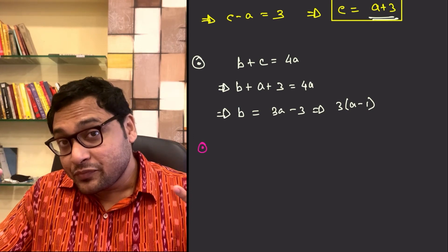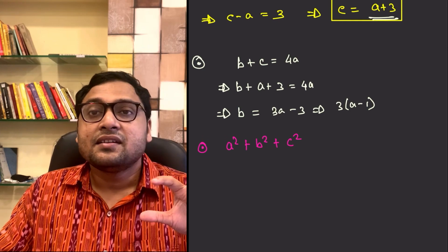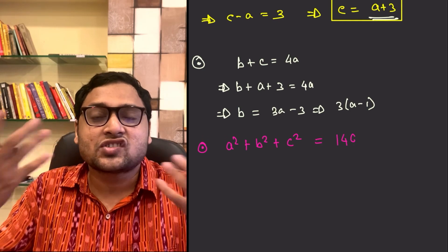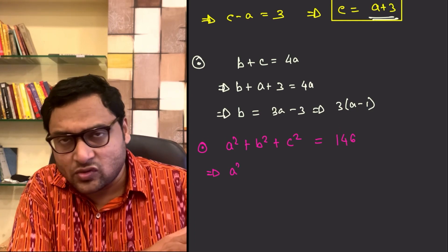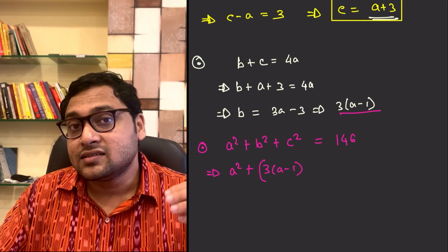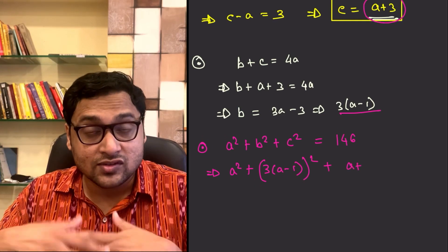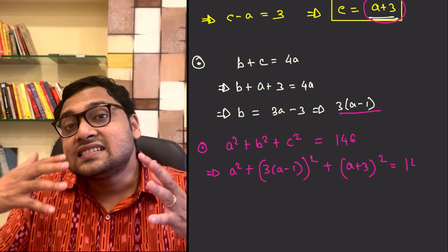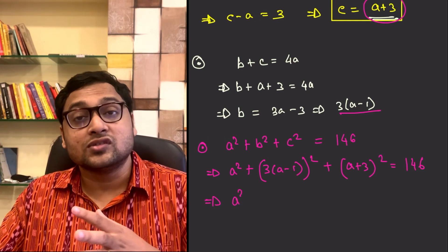So, now we come to the final step where we replace A, B and C by expressions in terms of A. So, A stays A, so we have A square. B becomes 3 times A minus 1, so the square of that becomes 9 times A minus 1 whole square. And C becomes A plus 3.